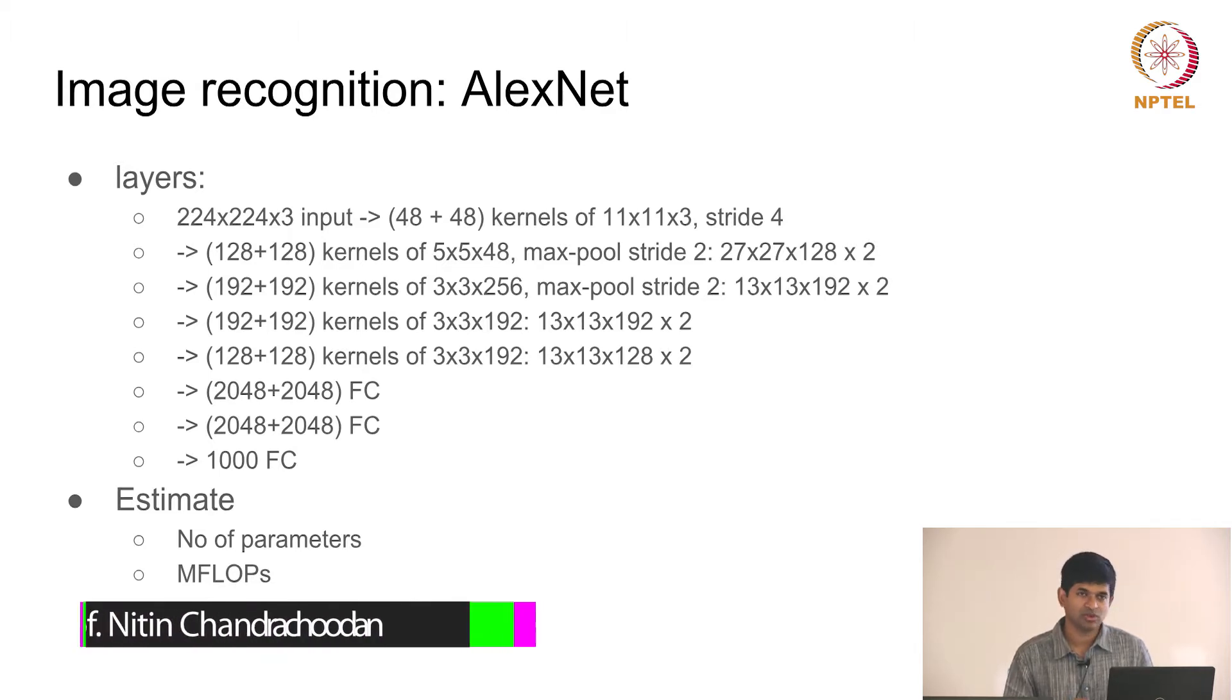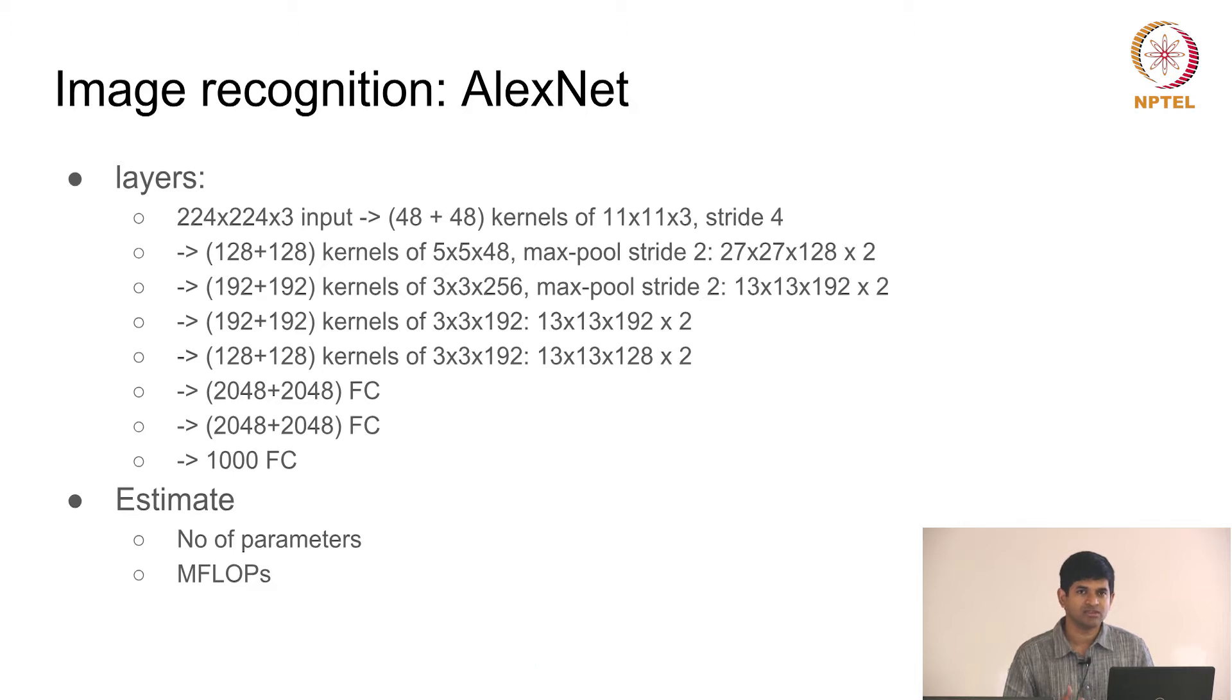For those of you who have done some reading on image processing, you would know that AlexNet in 2012 was the neural network that triggered the whole deep learning craze. Essentially what it showed was that by using a deep network with many layers, you could get performance that completely outclassed any other approaches used for image processing.